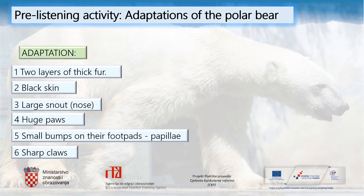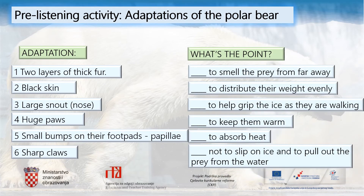And let's check the results. Here are the adaptations. Two layers of thick fur help to keep the bears warm. Black skin to absorb heat. A large snout or nose to smell the prey from far away. Huge paws to distribute their weight evenly. Small bumps on their foot pads — papillae — to help them grip the ice as they are walking. And sharp claws prevent them from slipping on ice and also help them to pull out prey from the water.